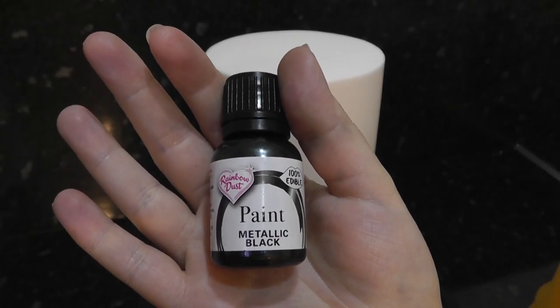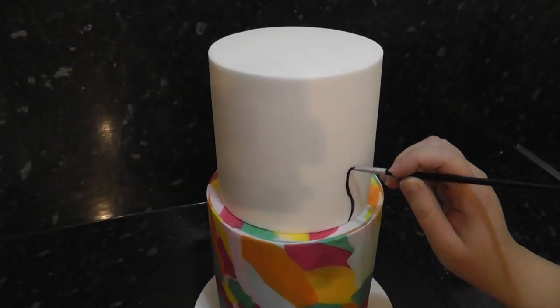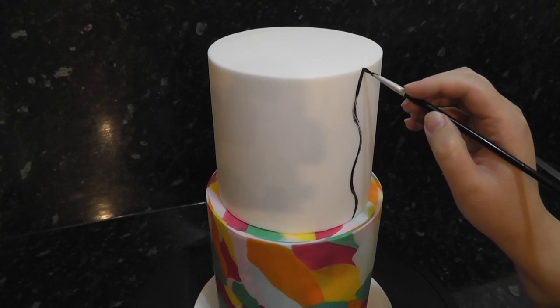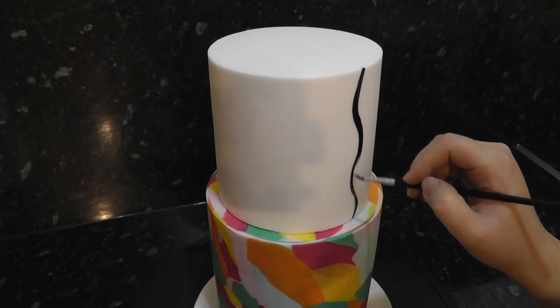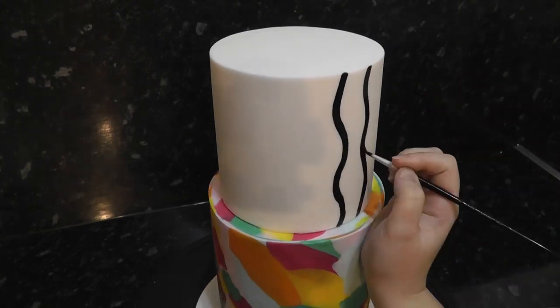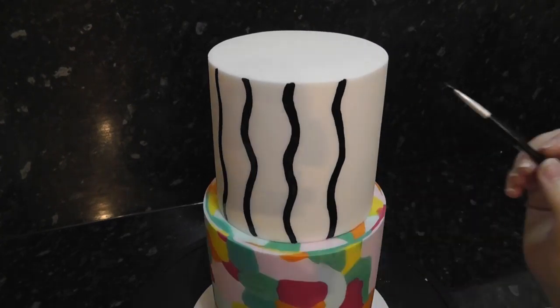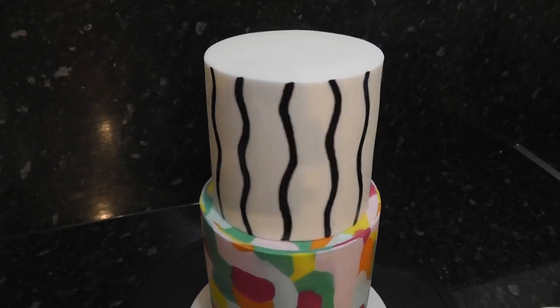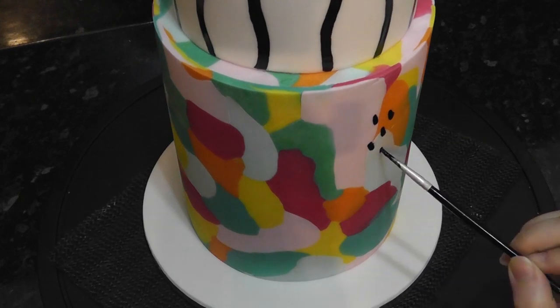Now for the paint, we are going bold in black with Rainbow Dust. Take a brush and start painting wavy lines on the top tier. It doesn't have to be perfect, it looks hand drawn which is exactly what we're looking for. With the same paint, add some little clusters of dots around the colored tier.